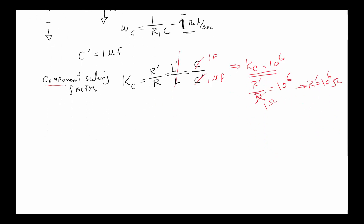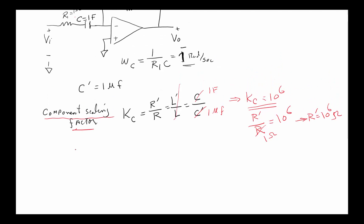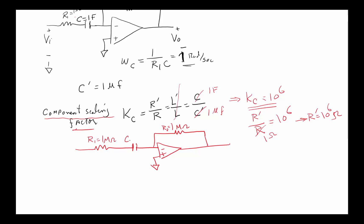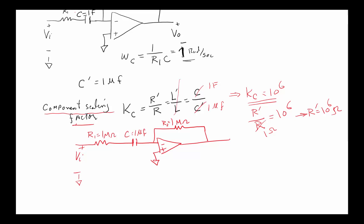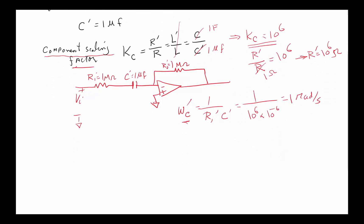Once we have the component scaling factor applied, our new filter needs a one megaohm resistor for R1, a one megaohm resistor for R2, and a one microfarad capacitor. The component locations don't change since we're still building a high-pass filter. Going back to verify: the new omega_C is one over R1' times C', which is one megaohm times one microfarad — we still get one radian per second. Nothing has changed.